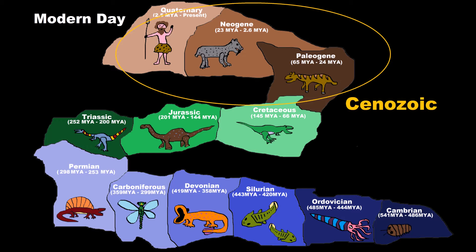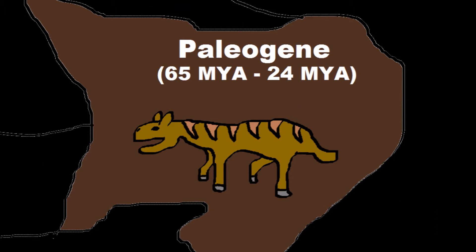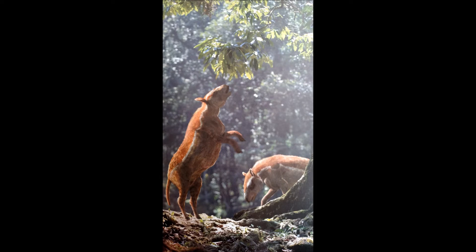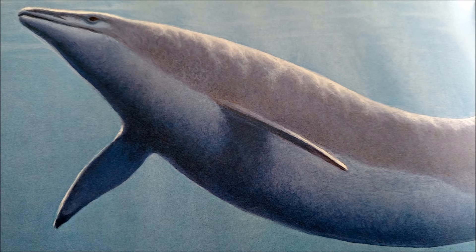Now, after the extinction came the next era — the last of them all and the current one we're living in — and that's called the Cenozoic. The Cenozoic began with the Paleogene. This is when animals were really small and birds ruled at the beginning. But soon the first primates started to develop, and the first whales.